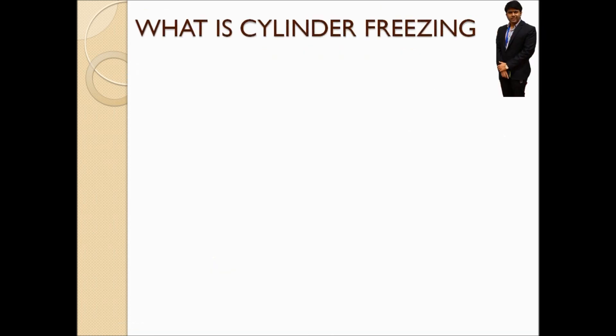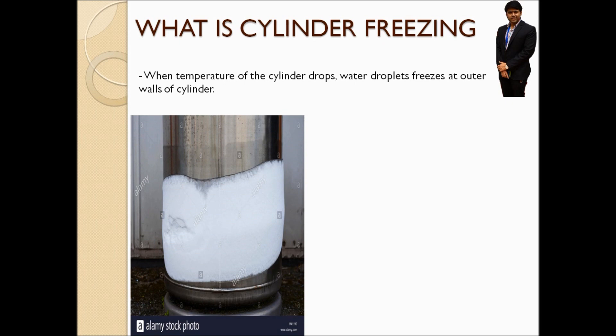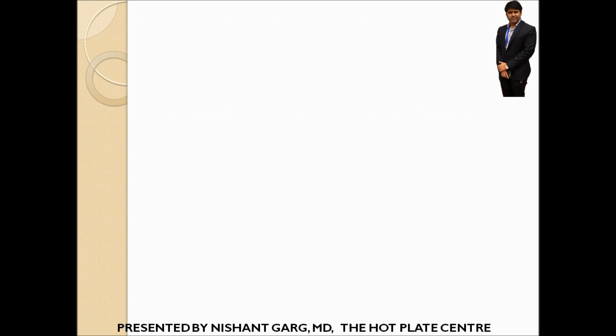In this slide I am going to explain exactly what cylinder freezing is. Whenever the temperature of a cylinder falls down, the water droplets formed outside the wall of the cylinder start freezing, due to which an icing layer is formed at the outer surface. Due to this icing layer, we are not able to use the cylinder to its full potential, and in some cases water starts coming out of the cylinder and runs down the pipeline.